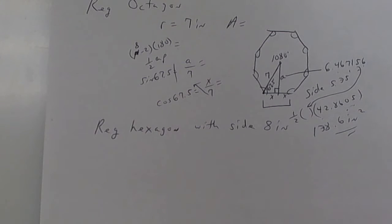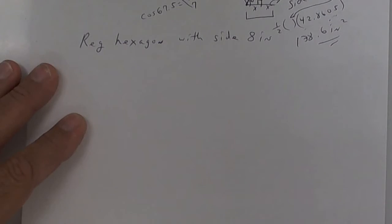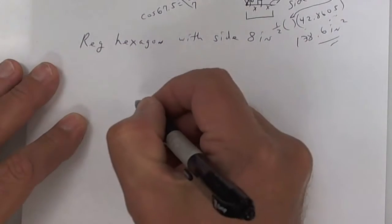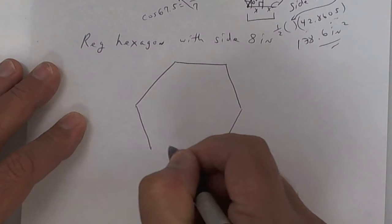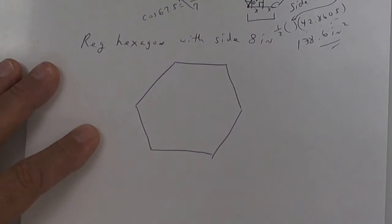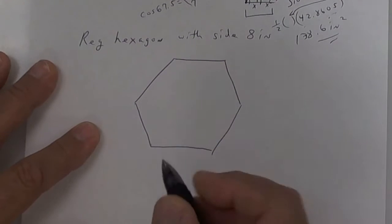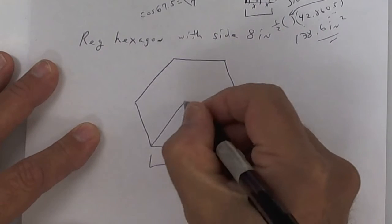We're going to do one more here, then I'll let you try one. It's a regular hexagon with a side of eight inches. Draw a hexagon — it's got six sides. In this case, we know the side is eight, so put an eight. Then put your triangle in and label apothem, x, and radius. Write down your two formulas: area equals one-half ap, and N minus 2 times 180.